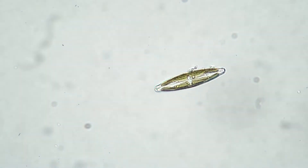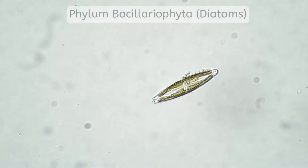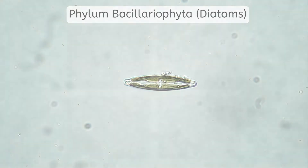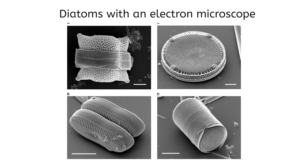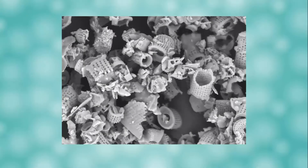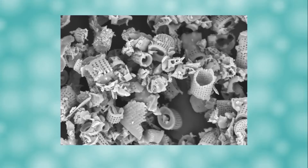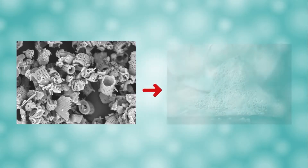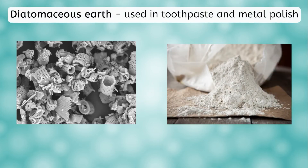One of the most beautiful phyla of protists is the Bacillariophyta, or as they are more commonly called, diatoms. Their silica-based cell walls are similar to glass, and they form complex, intricate structures on the outside that resemble snowflakes. When large deposits of diatom fossils accumulate on the ocean floor, they form diatomaceous earth, which is a powdery substance often used in toothpaste and metal polish.